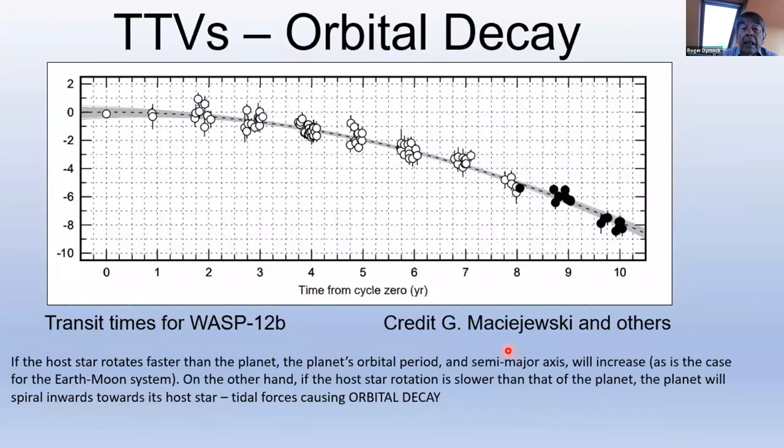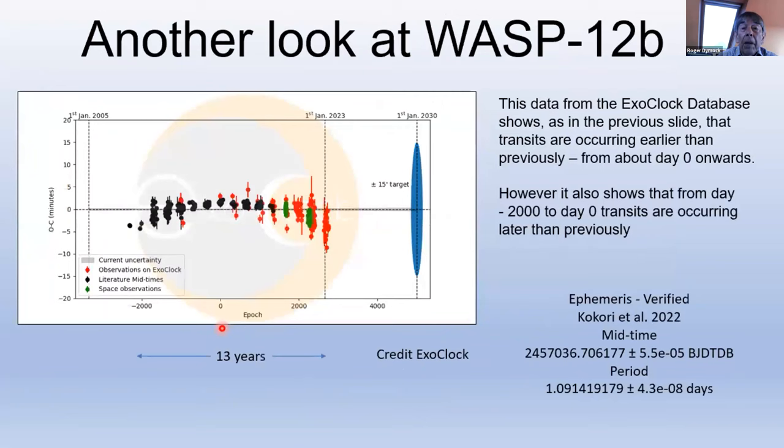Orbital decay. The vertical axis shows a change in transit times, negative indicating the transit times are earlier than predicted. The change is approximately eight minutes over 10 years. An alternative reason for the apparent change in the orbital period is precession of an eccentric orbit, as I will show after the next slide. Another paper actually concludes the orbit of WASP-12b is eccentric. You see here, you get a minus there, goes positive and comes back minus again. So there's two reasons for that change in transit times.